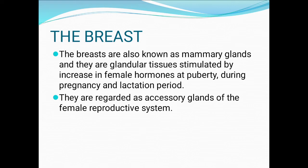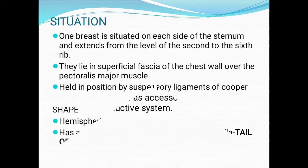They are regarded as accessory glands of the female reproductive system. The breast is the tissue overlying the chest muscles. Women's breasts are made of specialized tissue that produces milk as well as fatty tissues. The amount of fat determines the size of the breast. The milk-producing part of the breast is organized into 15 to 20 sections called lobes.